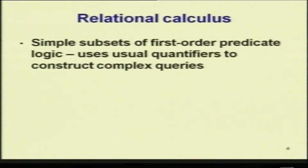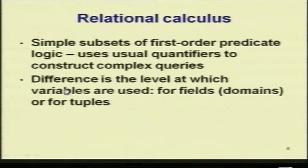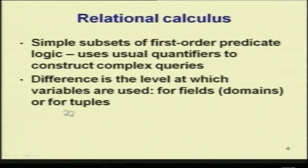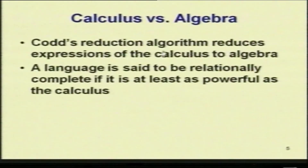Relational calculus is a simple subset of first-order predicate logic and uses some quantifiers to construct complex queries. Being first-order predicate logic means it has logical variables, logical operators, predicates which are true or false, and some quantifiers. The difference between the two calculi is in the level at which the variables are used: if used at the level of tuples (rows), it is called tuple relational calculus; if at the level of attributes or columns (domains), it is called domain relational calculus.